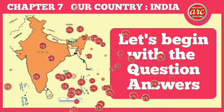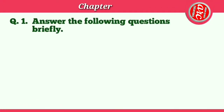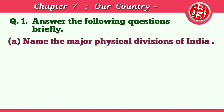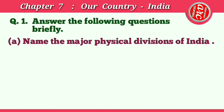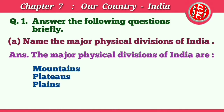Question number one: Answer the following questions briefly. (a) Name the major physical divisions of India. Answer: The major physical divisions of India are mountains, plateaus, plains, coasts, and islands.